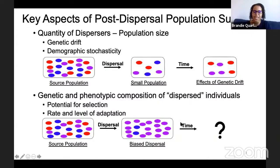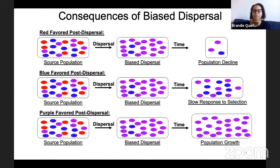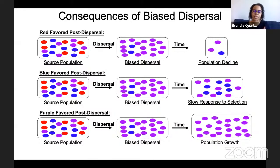For the genetic and phenotypic composition of dispersed individuals, that's going to influence the potential for selection and the rate and level of adaptation. In this example, dispersal is biased — the purple individuals are able to disperse better than the others. Just this first step of dispersal, we've lost one of our genotypes because it wasn't as able to disperse as far. What happens next depends on the environment: if red is favored post-dispersal but isn't present, we may have population decline. If blue is favored, we have very low starting allele frequency and may have a slow response to selection. If purple is favored, we have lots of purple and can actually get population growth, spurring future population spread.